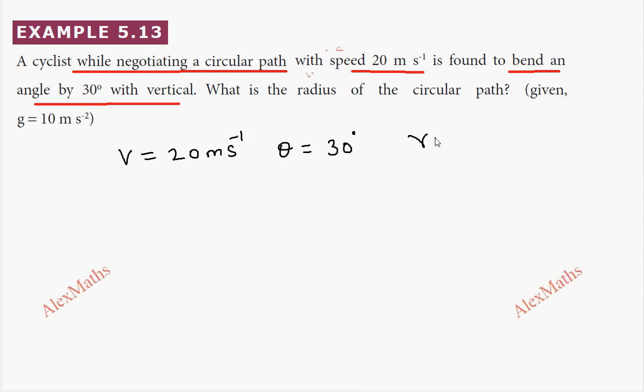So velocity 20 meter per second and theta with vertical 30 degree. What is the radius of the circular path? r is what we need, g value 10 meter per second square.